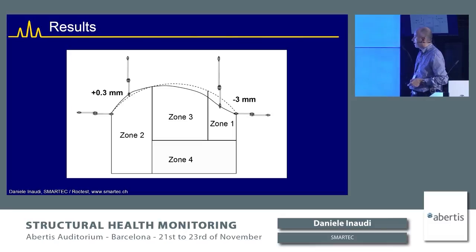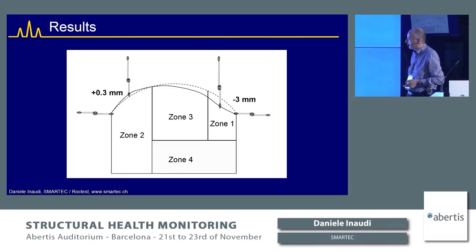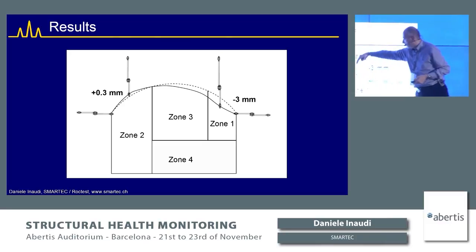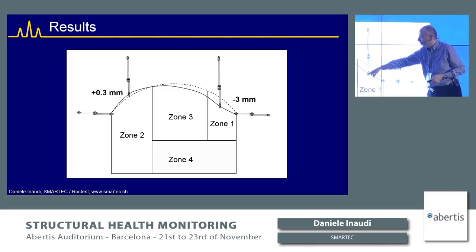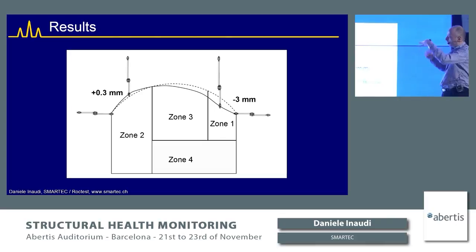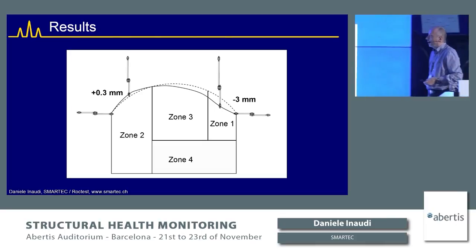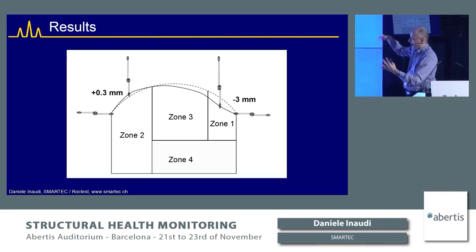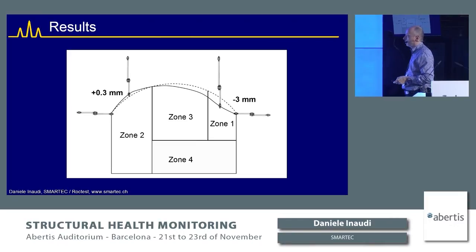The measurements captured large deformation on one side and very little on the other, suggesting a geological formation causing the tunnel to rotate rather than converge uniformly.